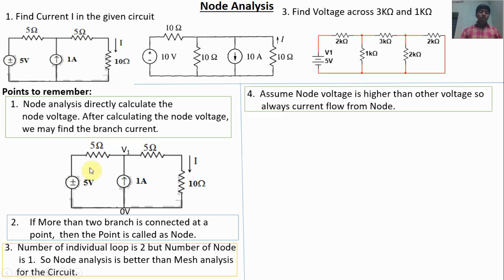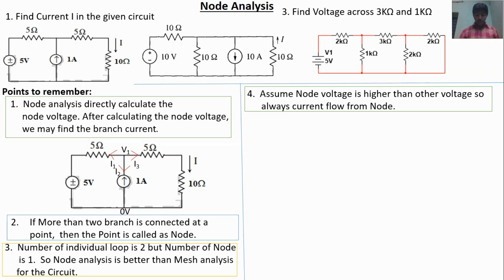In node analysis, assume the node voltage is at a higher potential. Always the node voltage will be higher than other voltages in the circuit. So always assume the current flows out from the node. This gives us currents I1, I2, I3. By Kirchhoff's current law, sum of incoming current equals sum of outgoing current. Here there is no incoming current, so I1 plus I2 plus I3 equals zero.